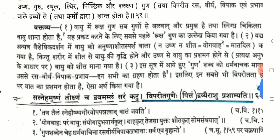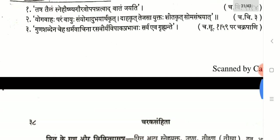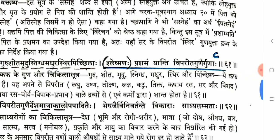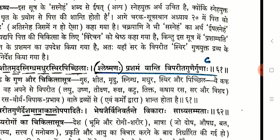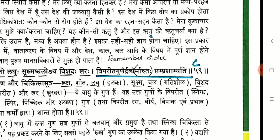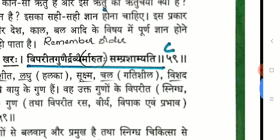The seven qualities of Pitta are: Sasneha, Ushna, Tikshna, Drava, Amla, Sara, Katu. The seven qualities of Kapha are: Guru, Shita, Mridu, Snigdha, Madhura, Sthira, Picchila. The second part of the Shloka is highlighted for Vata, Pitta and Kapha because its meaning is the same for all three, but questions may present the Shloka with a blank at that marked position.